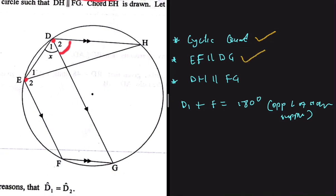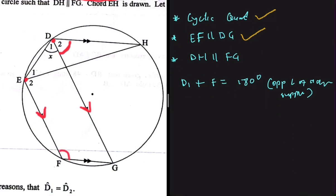Our second keyword is that EF is parallel to DG. There isn't anything we can say about d1 or d2 directly from those two parallel lines, but we can say that angle F plus angle G equals 180 degrees — they are co-interior angles.